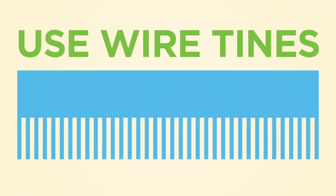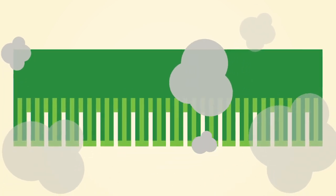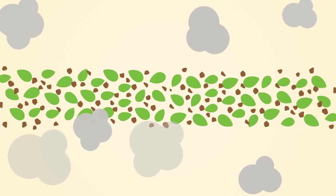If possible, only use wire tines on sweeper heads. Using rubber flaps instead of just wire tines can increase dust from the sweeper, adding dirt to the windrow and increasing dust at pickup.